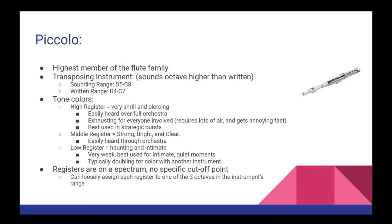The piccolo has approximately three primary tone colors, depending on where you are in its register. The highest register is incredibly shrill and very powerful — a single piccolo playing in its highest register can easily be heard over an entire orchestra playing at the same time. However, it's very exhausting for everyone involved, requiring a lot of air for the players, and very quickly becomes distracting and annoying to the audience. As such, this register is best used in very short and strategic bursts. The middle register is very strong and bright, and can be heard fairly well over the other instruments of the orchestra. The low register is incredibly haunting and very intimate, but also incredibly weak, so it's best used in very quiet moments or when doubling another solo instrument to provide a little extra color to the sound.